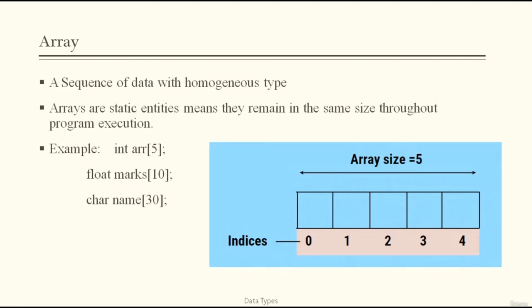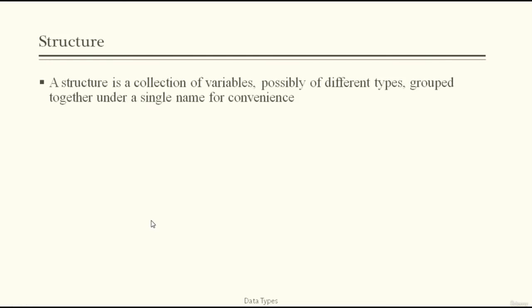Because data is stored in one particular sequence with a particular structure, this is known as a data structure. In arrays we store homogeneous data types in sequence, whereas sometimes we need to handle data of dissimilar types — for that, we declare a structure.